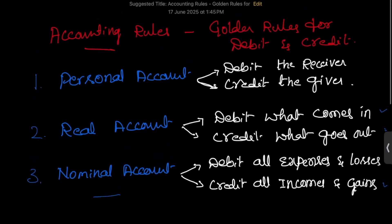As per the traditional approach, accounts are classified into three categories: personal account, real account, and nominal account. I explained these in the previous video with examples. The rule for personal account: debit the receiver, credit the giver. For real account: debit what comes in, credit what goes out. For nominal account: debit all expenses and losses, credit all incomes and gains.